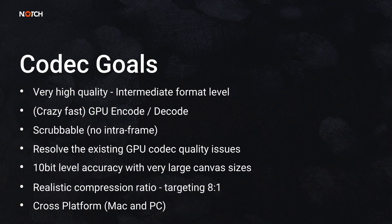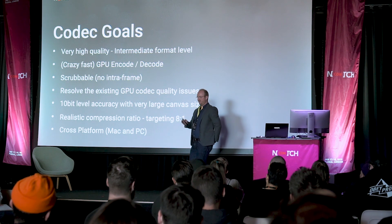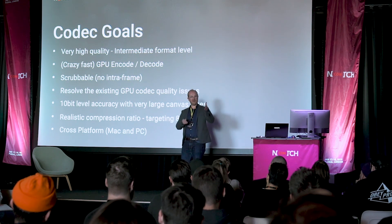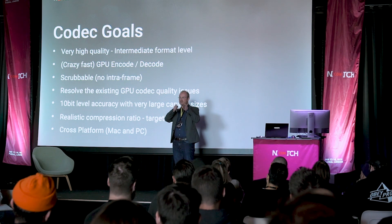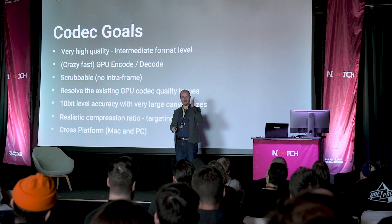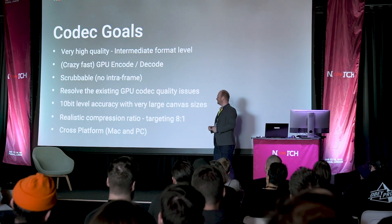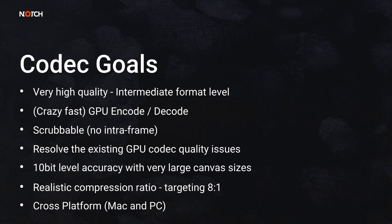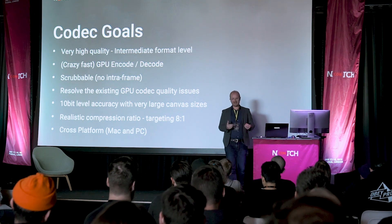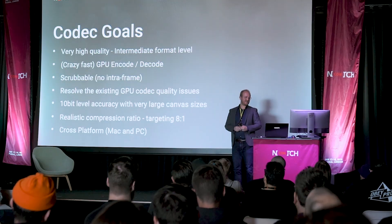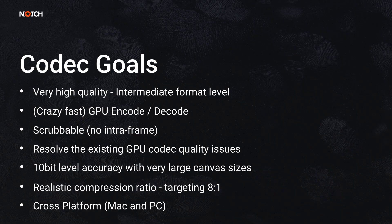With any codec you're using in a media server or a non-linear editor, you need to be able to scrub, and that means every frame needs to be stored in the codec. You can't have keyframes with a bunch of delta intra-frames all the way through — you have to have a full frame of data for every frame. We really wanted to resolve existing GPU codec quality issues, things like gradients. As we move into the world of higher bit rates, we wanted something allowing around a 10-bit level of accuracy in these large canvases.